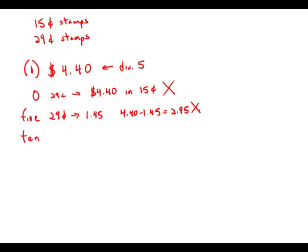Next possibility, if we buy 10 29-cent stamps, well, of course, that would be 290. And 440 minus 290 is conveniently $1.50. And, of course, we can buy $1.50 worth of 15-cent stamps. So this case works. So we'll keep that in mind. That's one case that definitely works.